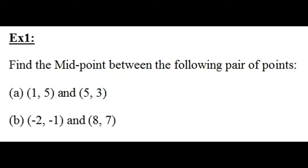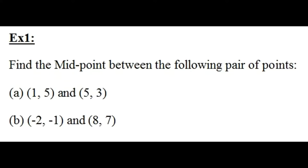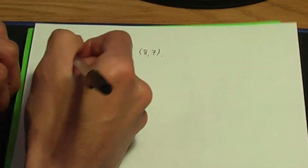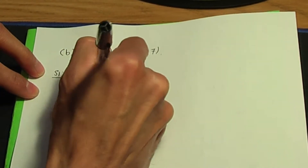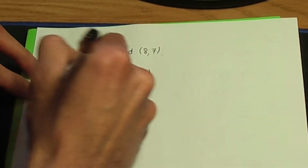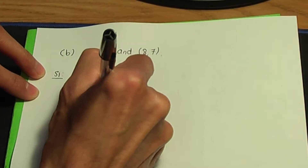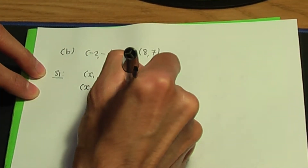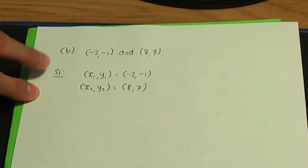For part B, we need to calculate the coordinates of the midpoint for the points minus 2, minus 1, and 8, 7. In step one, I'm going to name the first coordinate x1, y1. So x1, y1 is minus 2, minus 1. And I'm going to call the remaining coordinate x2, y2, which is 8 and 7.